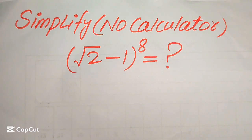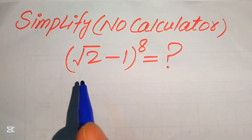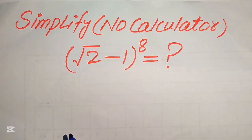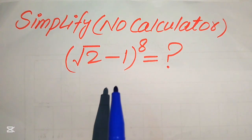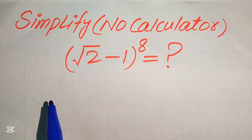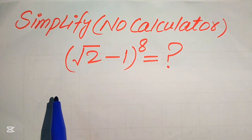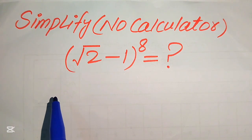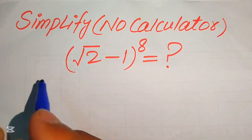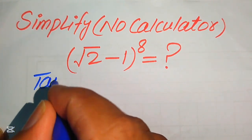Hello everyone, welcome. We have a nice algebra problem: the square root of 2 minus 1 to the power of 8, and we need to simplify this algebraic expression without using a calculator. We will show all of the working on paper. If you have any other method in mind, please don't hesitate to write it in the comment section.